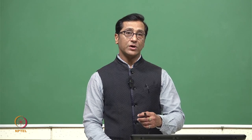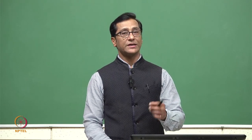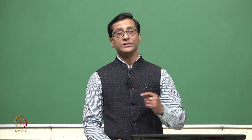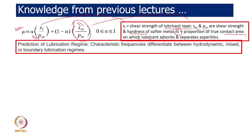Going directly to mathematical models without understanding parameter importance will not yield good optimization. The coefficient of friction can be expressed as a function of lubrication regime: where S_L is shear strength of the lubricant layer, S_M is shear strength of the metal surface, P_M is the hardness of the surface material, and alpha is the proportion of the true contact area supported by liquid. If there is more metal-to-metal contact, shear strength is much higher than the liquid lubricant, so coefficient of friction is higher.